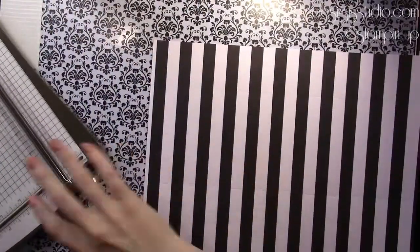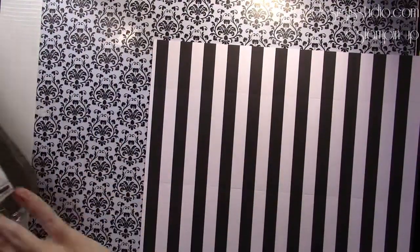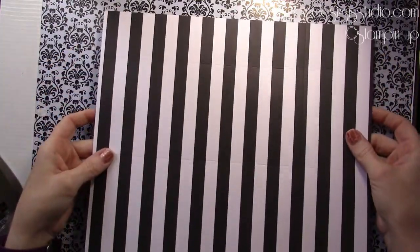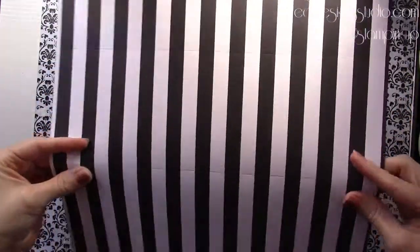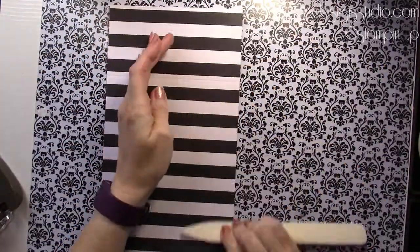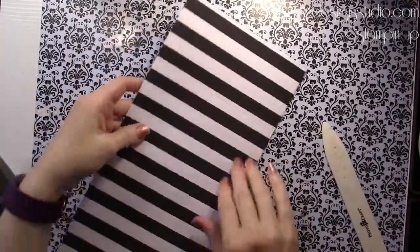So we're going to line it up at three and we're going to score it. Then we're going to go to six and score. And then we're going to go over to nine and score.